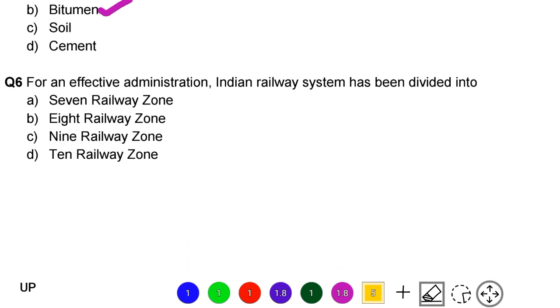Next question: for an effective administration, the Indian railway system has been divided into. Option A: 7 railway zones. Option B: 8 railway zones. Option C: 9 railway zones. Option D: 10 railway zones. The correct answer is option C, 9 railway zones.